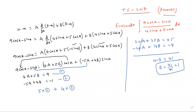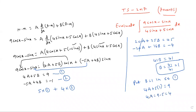We get b is equal to 1. Substitute b into equation 1: 4a plus 5 into 1 equals 9, so 4a equals 9 minus 5, which is 4. Therefore a equals 1. Both a and b are equal to 1.